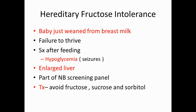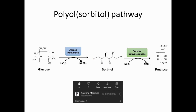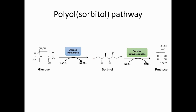Hereditary fructose intolerance is part of the newborn screening panel for early prevention. Treatment involves avoiding fructose, sucrose, and sorbitol. Sorbitol must be avoided because, via the polyol pathway, aldose reductase converts glucose to sorbitol, and sorbitol dehydrogenase then converts sorbitol into fructose — meaning sorbitol will ultimately produce fructose and worsen the disease.